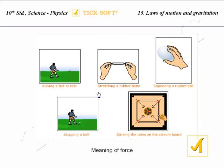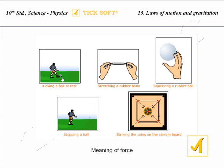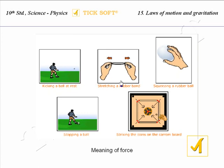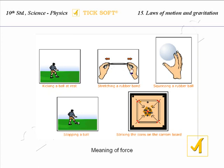The first picture explains the kicking of a ball at rest. The football player kicked the ball which was at rest, and when he kicked it, the ball flew away. The second picture explains stretching a rubber band. Before stretching, the rubber band is in one shape; when stretched from two sides, the rubber band expands — a force acts on it.